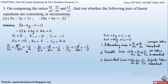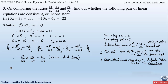Observe that all three ratios a1 by a2, b1 by b2, and c1 by c2 are equal to minus 1 by 2. When all three ratios are equal, the lines will be coincident, having an infinite number of solutions, and therefore the pair of linear equations will be consistent. Therefore, a1/a2 = b1/b2 = c1/c2, the lines are coincident, and the pair of linear equations is consistent.